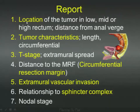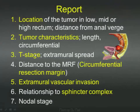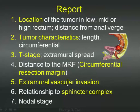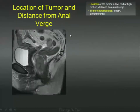The seven key reporting points are: location of the cancer — whether it's upper, mid, or lower rectum; distance from the anal verge; tumor characteristics in terms of length and whether it's circumferential; the T stage of the tumor; whether there is extension into the surrounding mesorectal fat; distance to the mesorectal fascia, also referred to as the circumferential resection margin; extramural vascular invasion — extension into vessels surrounding the tumor; relationship to the sphincter complex; and finally, nodal stage.